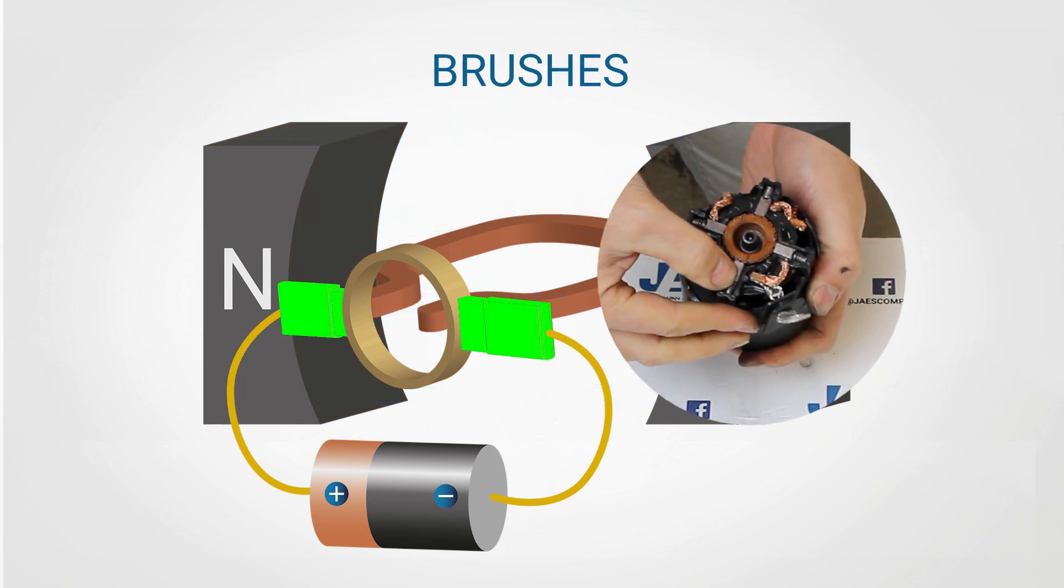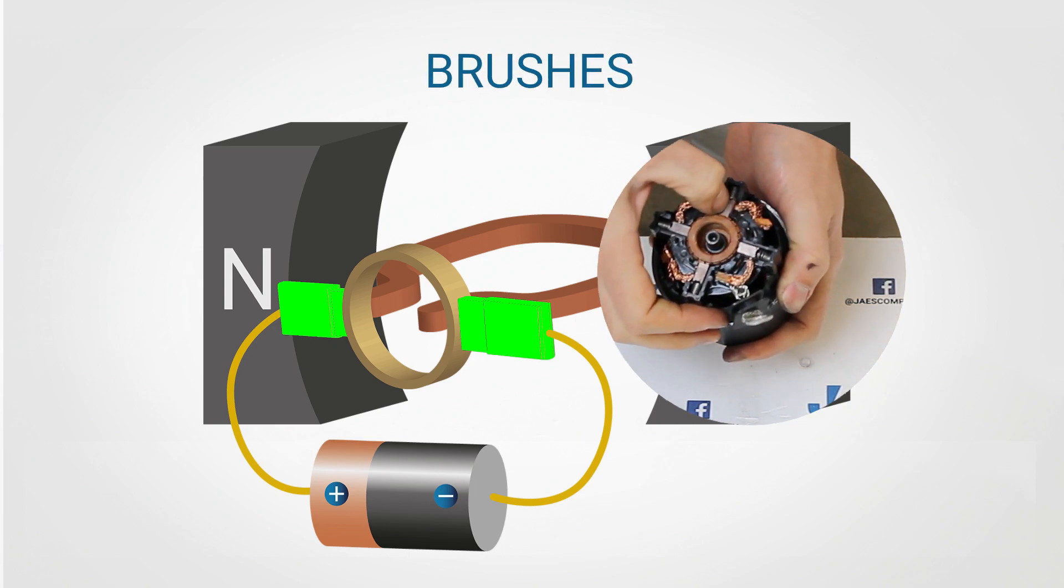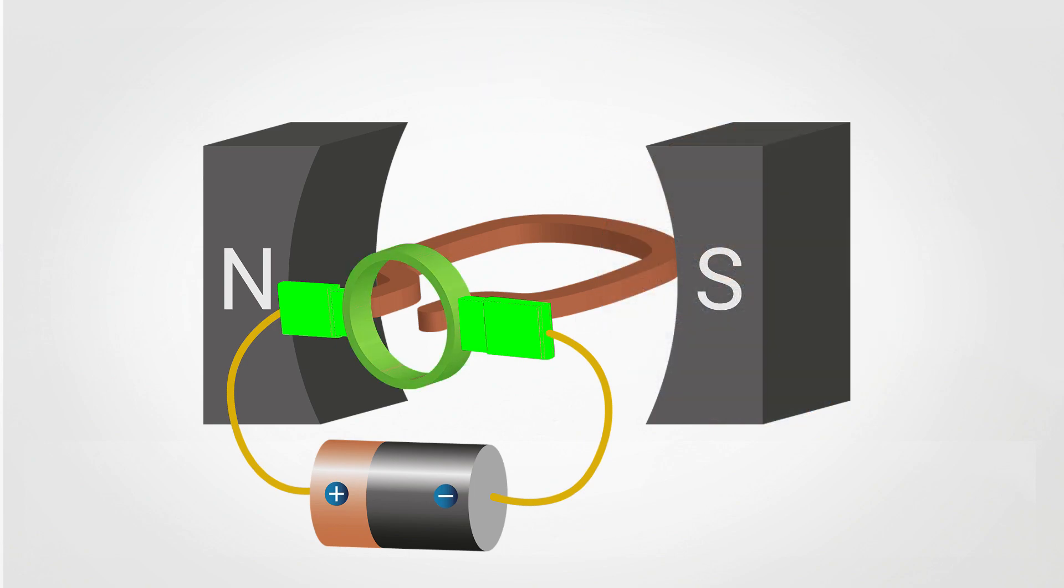These are the brushes which allow the electricity to flow into the copper coil of our engine. When the electricity flows into the coil, we notice that on the left side of the coil, the electricity will always flow away from us, while on the right side, electricity will always flow towards us.